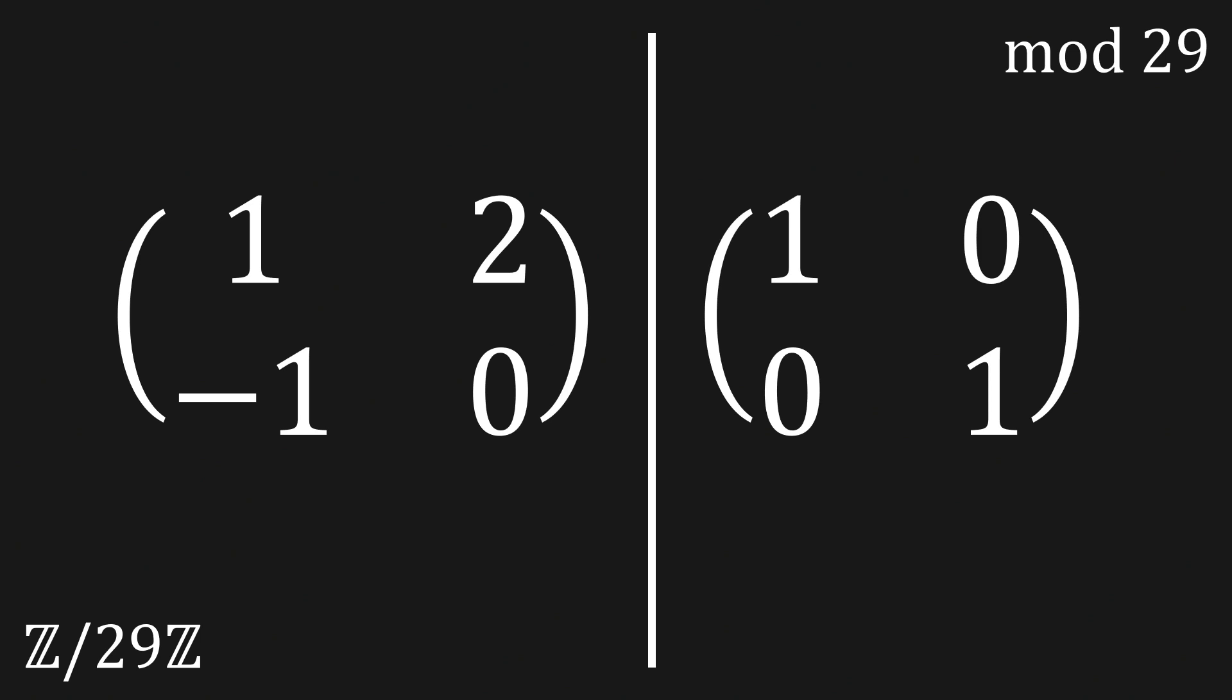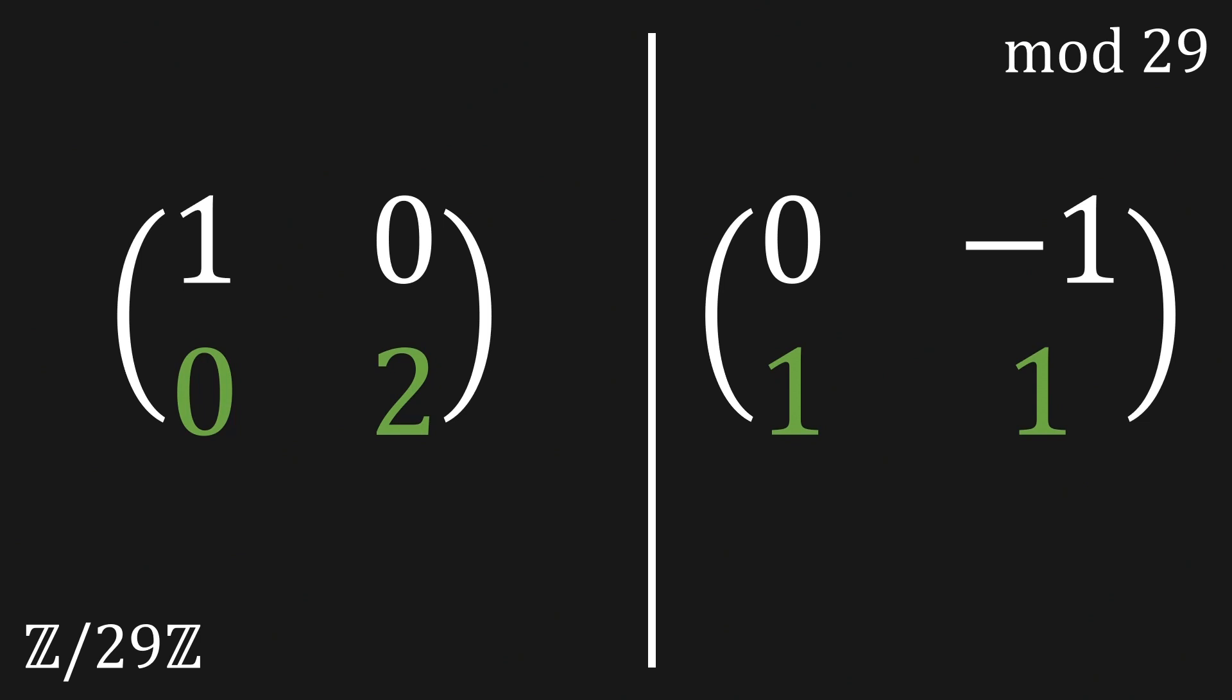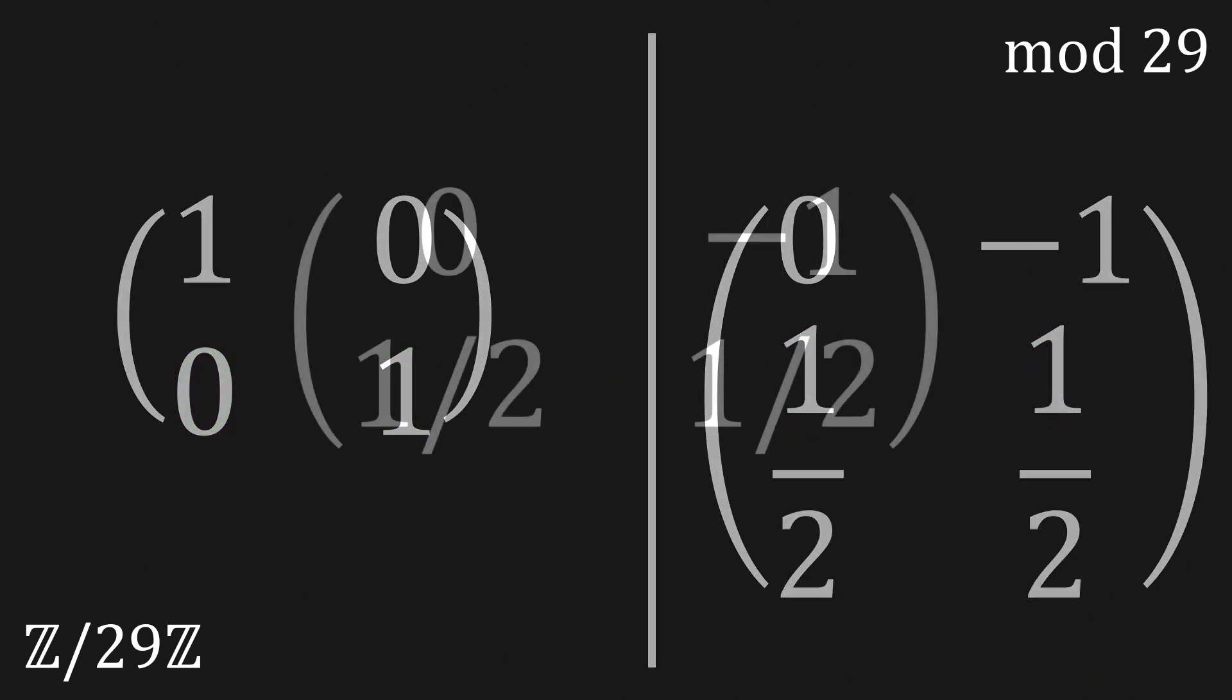Every single operation we apply to the left-hand side is similarly applied to the right-hand side. To start let's add the first row to the second row. After that subtract the second row from the first row. Finally you could divide the second row by 2. As a result you get this matrix.